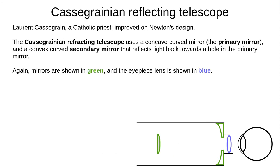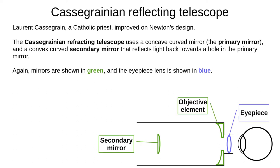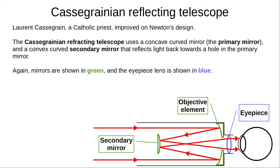Our last type of telescope is an improvement on Newton's design by Laurent Cassegrain, a Catholic priest. This telescope uses a similar concave primary mirror, but the secondary mirror is a convex mirror that reflects light back towards a hole in the primary mirror, where we find the eyepiece. The ray diagram shows that this telescope will produce an inverted image.